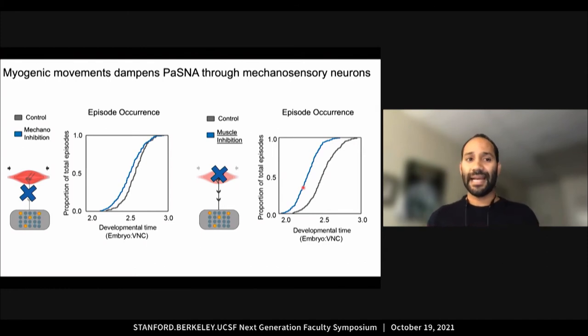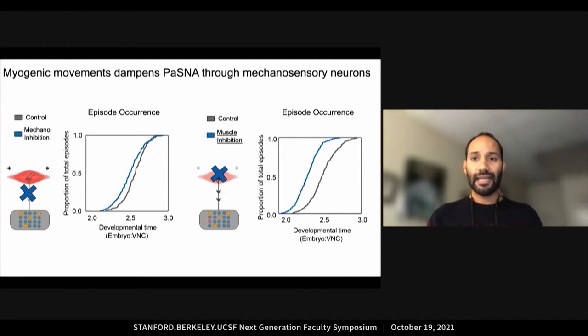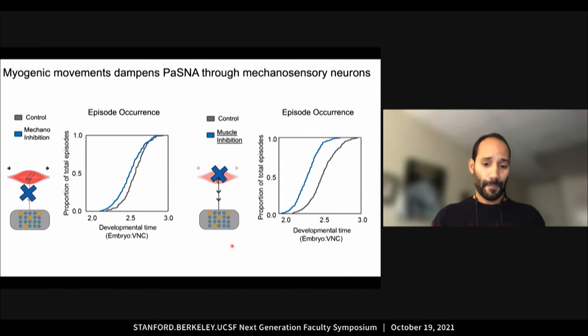Thus, mechanosensory neurons are relaying information about muscle twitches to the CNS and negatively modulating PASNA.